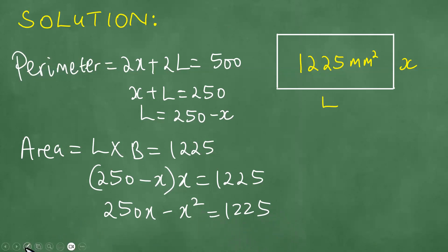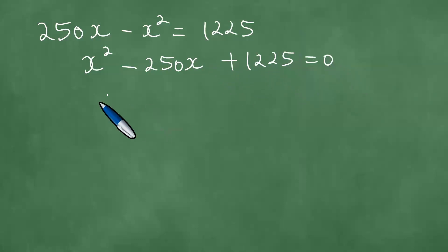So what is the meaning of this now? Which means, therefore, if we have this, we have 250x minus x squared equals 1225. Rearranging: minus x squared minus 250x plus 1225 and the result is 0.